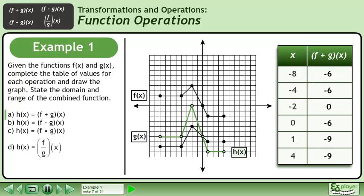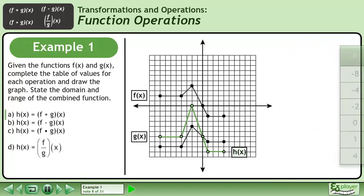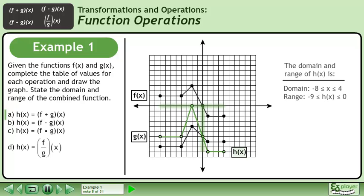We can now draw the graph of h. The domain of h is between negative 8 and 4 inclusive. The range of h is between negative 9 and 0 inclusive.